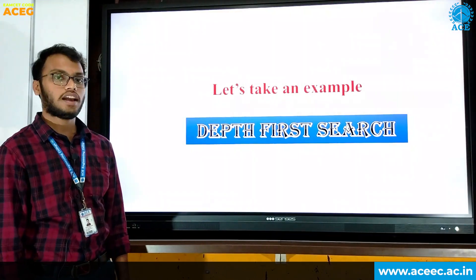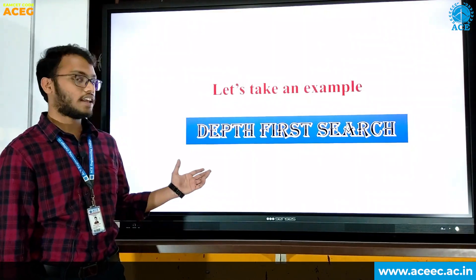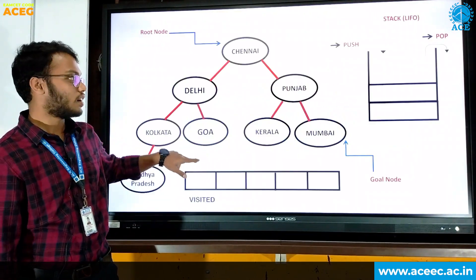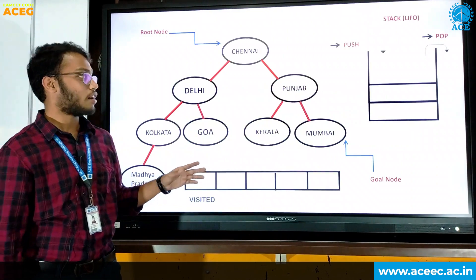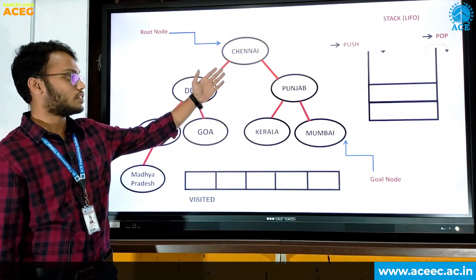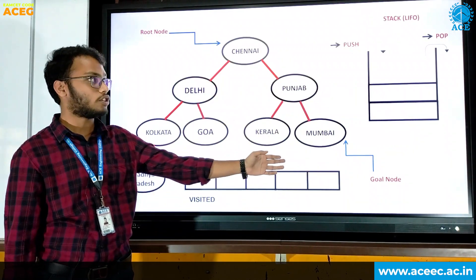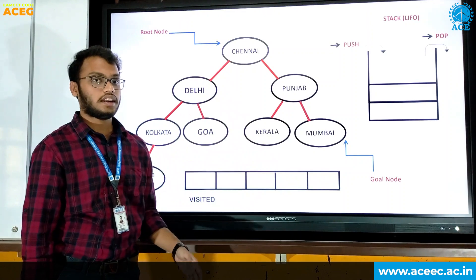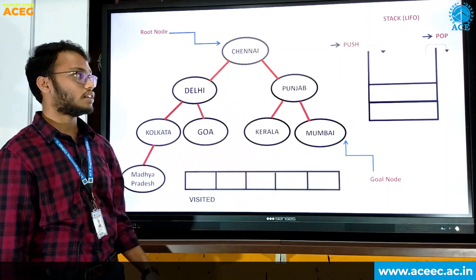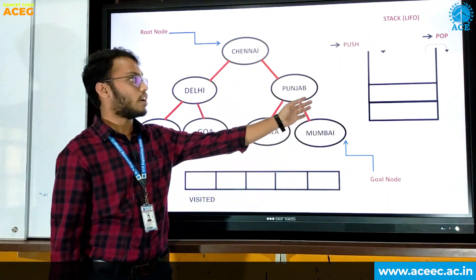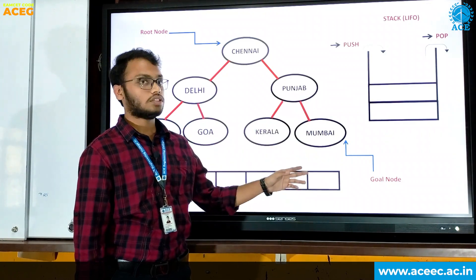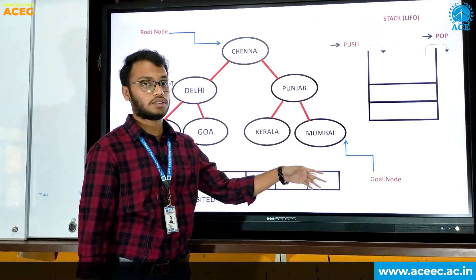Hello everyone, I am Tarun. Today let us take an example of depth-first search. Here I am taking this graph as an example. In this graph, our initial node is Chennai and our goal node is Mumbai. In depth-first search, we use stack operations. In a stack, we will have two operations — push and pop — and we will use last-in first-out.